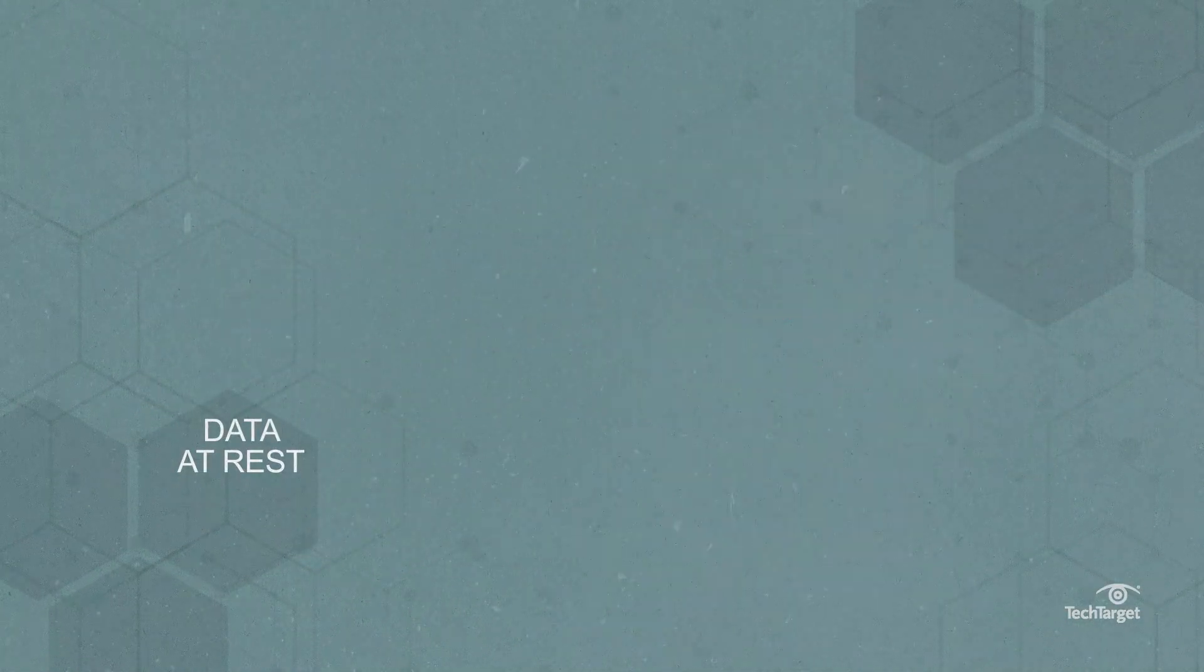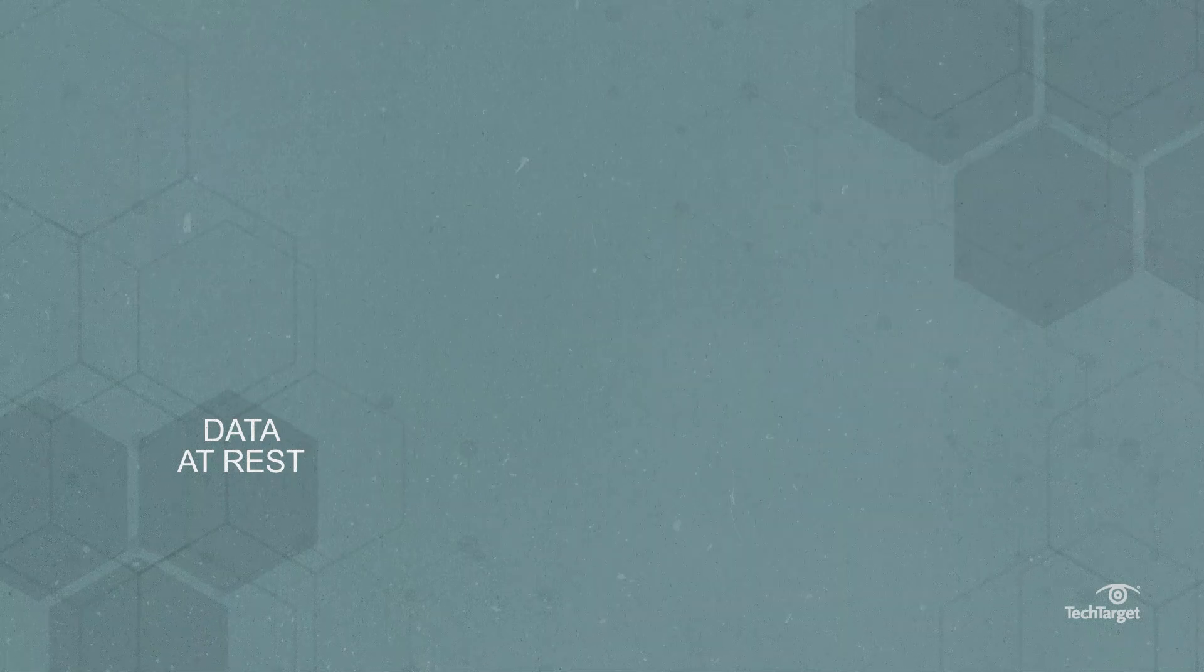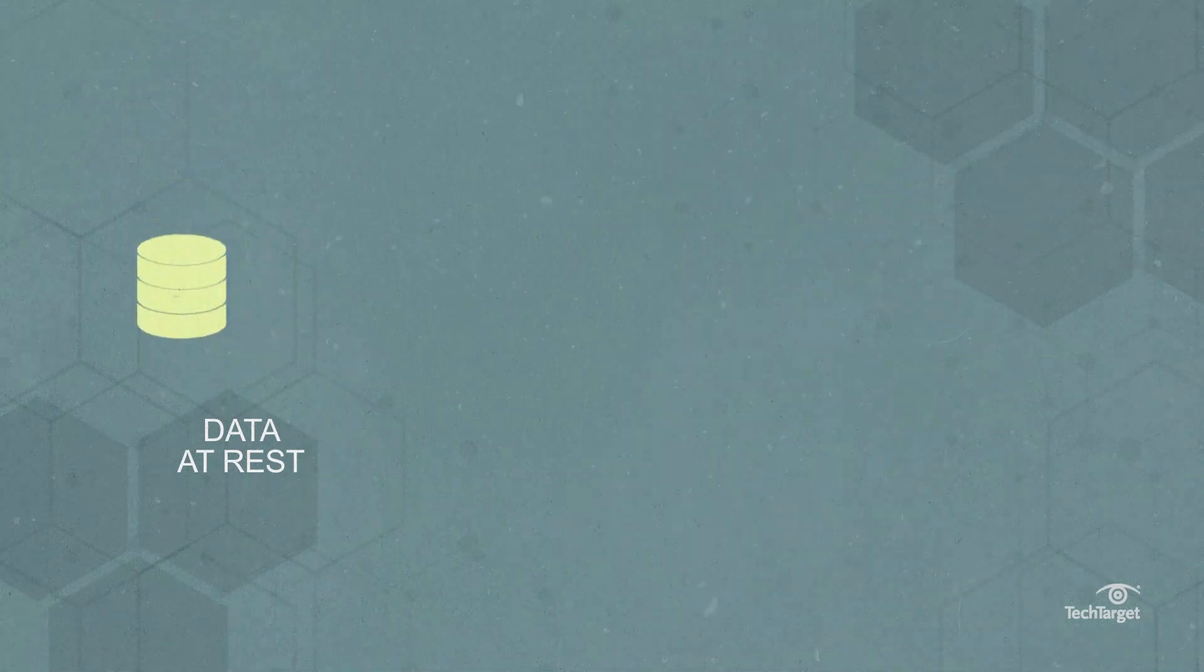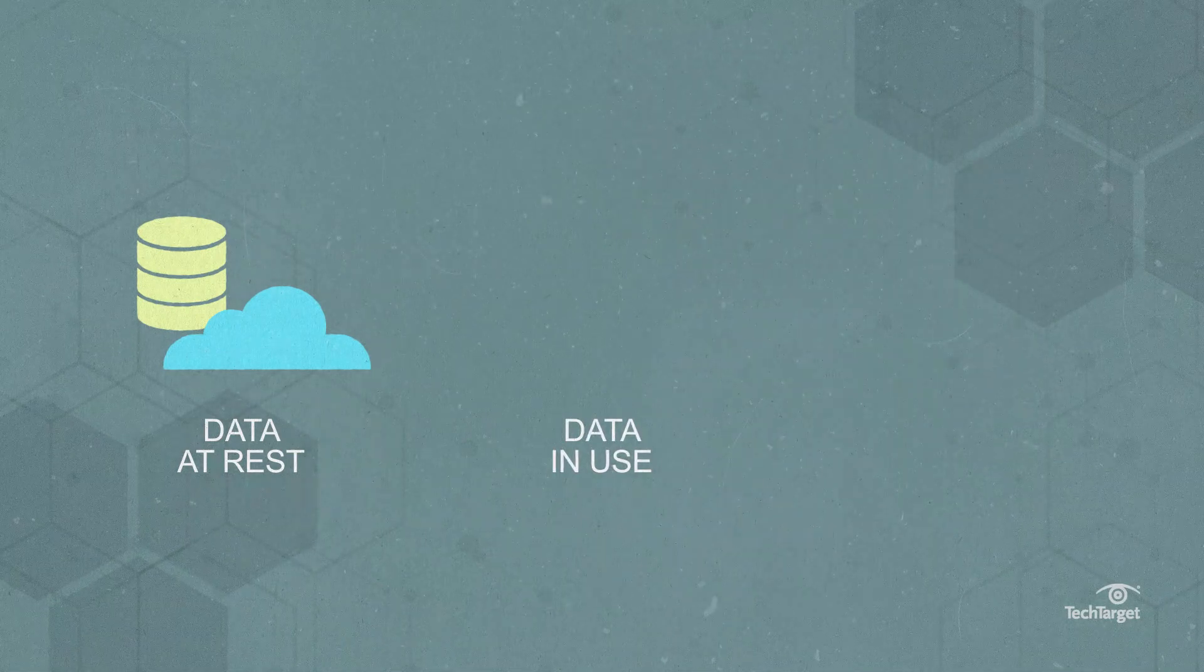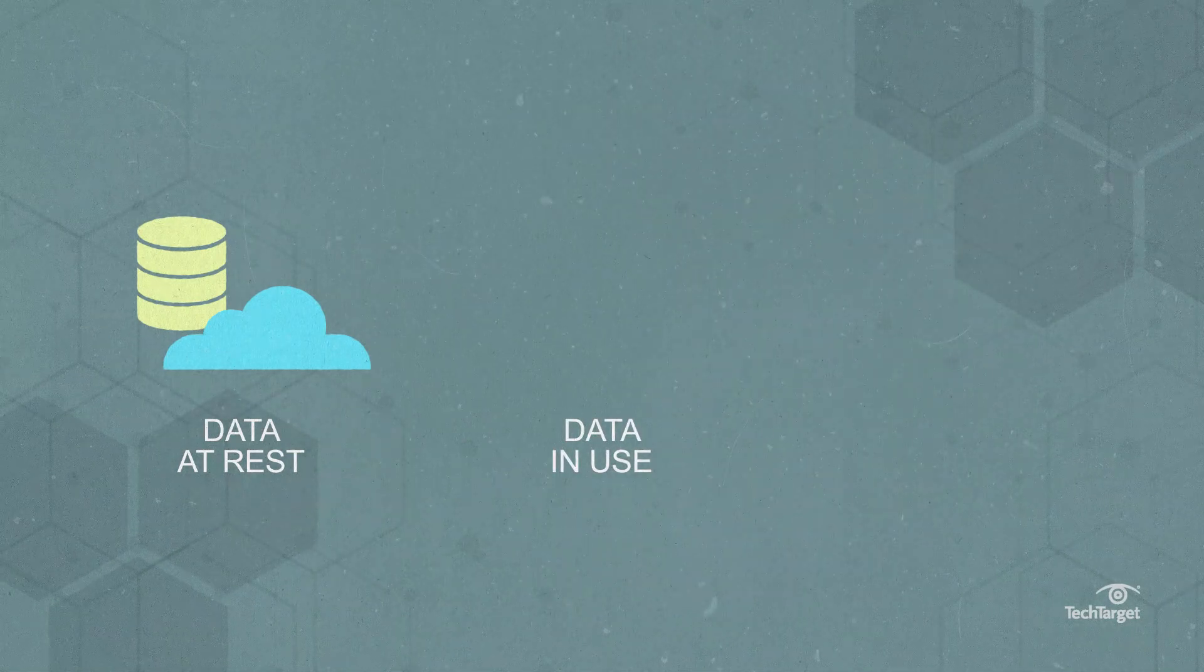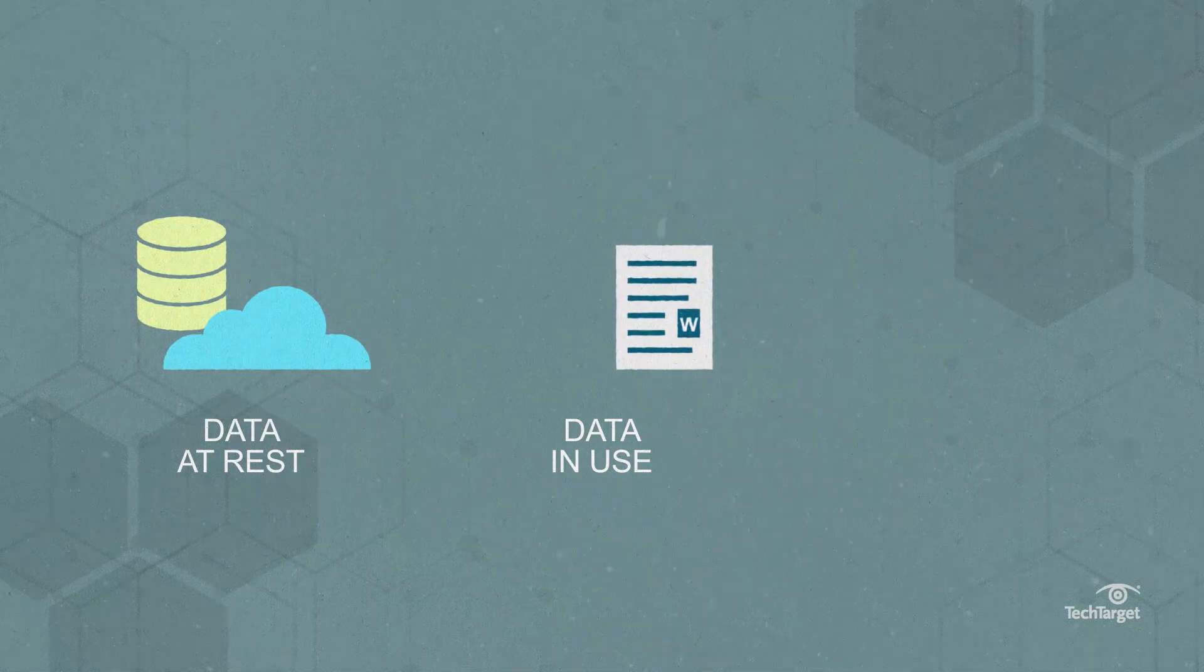Data at rest refers to information that has reached its destination and is not in use, like backup or cloud storage. Data in use refers to information that's currently being accessed or processed, like an open Word document or PDF.